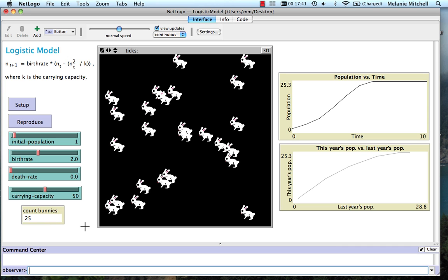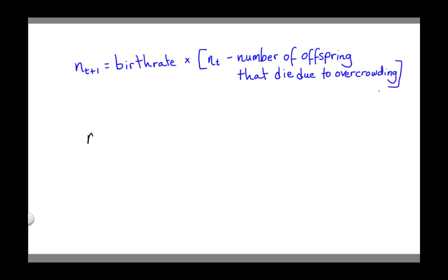Well, this is just the way the model works. If there are 25 individuals, then 25 squared divided by 50 equals 12.5 of those individuals will die off, and the remainder have a birth rate of 2 to create offspring for the next generation. So we get 25.